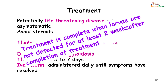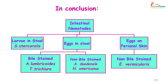To conclude, we discussed intestinal nematodes. The intestinal nematode where you see larvae in the stool is Strongyloides stercoralis. Those where bile-stained eggs are seen in the stool are Ascaris lumbricoides and Trichuris trichiura. Non-bile-stained eggs in the stool are from Ankylostoma duodenale and Necator americanus. Eggs found on the perianal skin are the non-bile-stained Enterobius vermicularis eggs. Thank you, I hope you have understood intestinal nematodes.